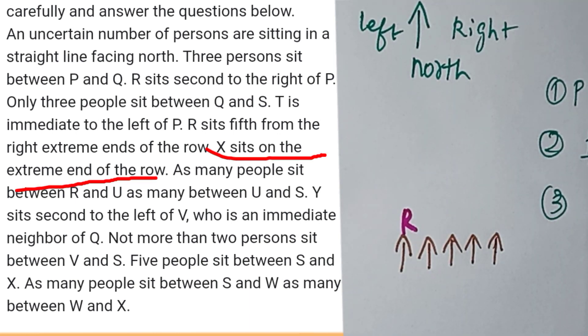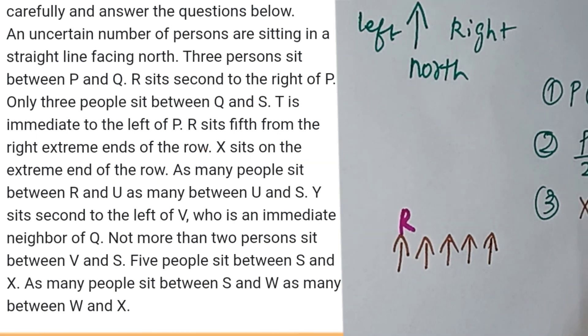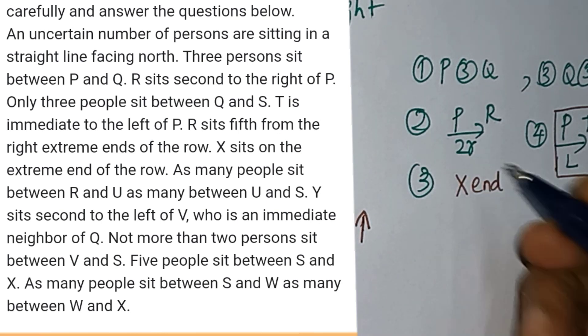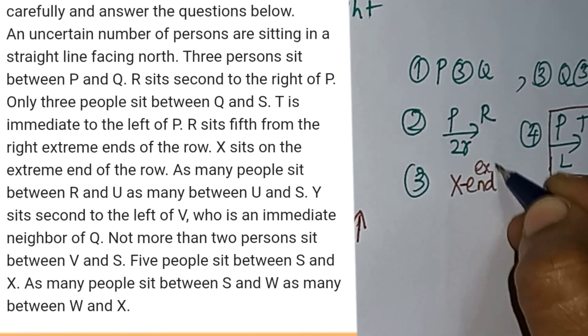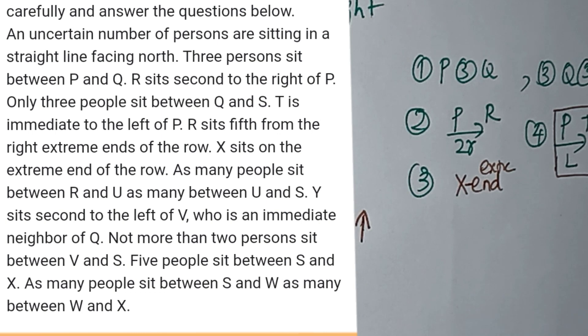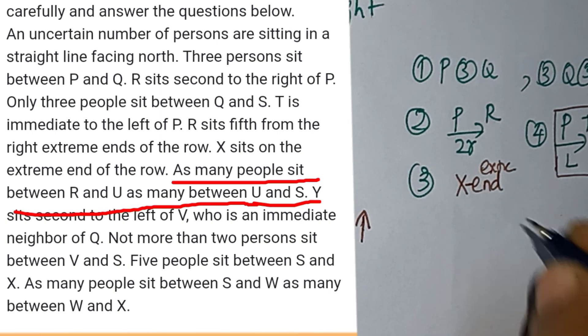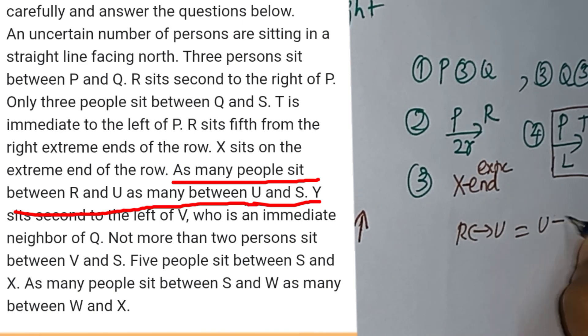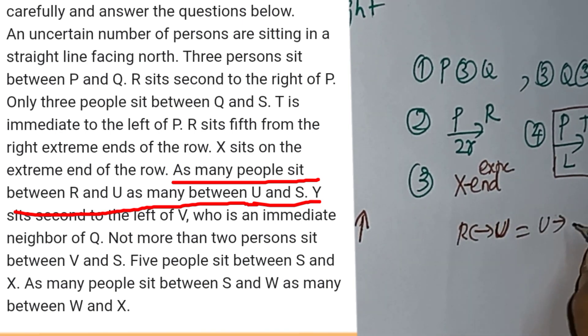The clue is X sits on the extreme end. You can confirm that X is ending, extreme end. At the point, as many persons between R and U, and at the same time U and V. So U and V are confused.